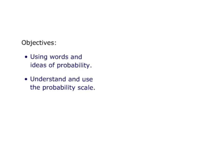In today's class we're going to discuss two things. We're going to look at the words and ideas of probability, and we're also going to understand and use the probability scale. Scale is a word we use to measure. So we're going to find out what probability is all about, use some words to describe it, and then see how we measure it.